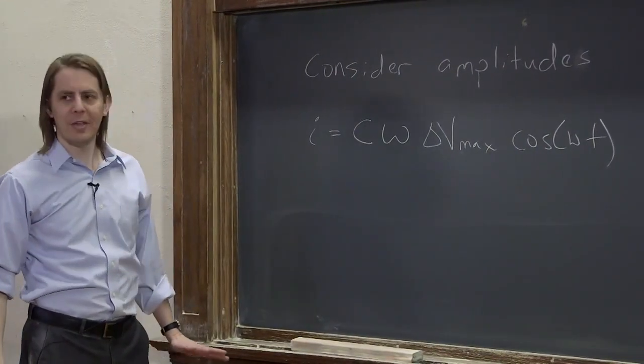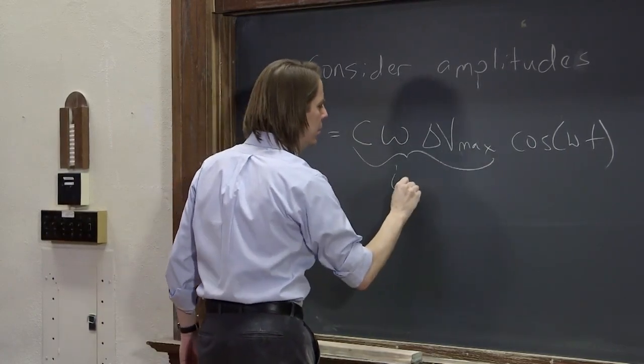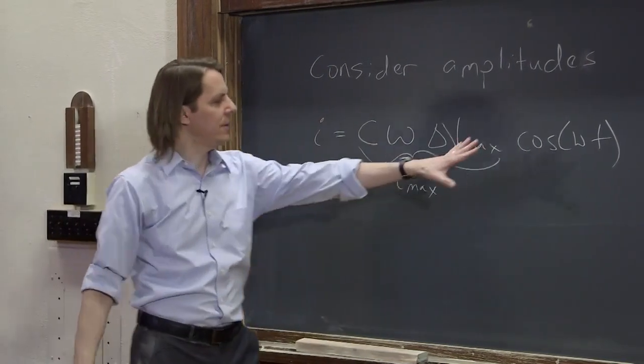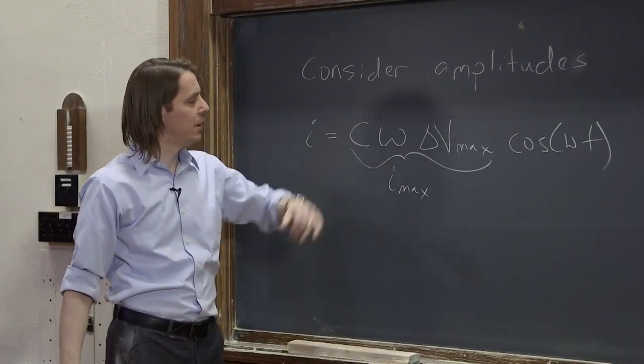But if we just wanted to think about the amplitude of the current, it would be this. It's a sinusoid with an amplitude, C omega delta V max.